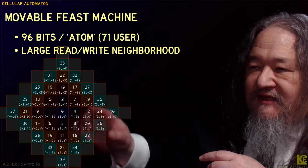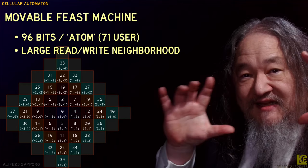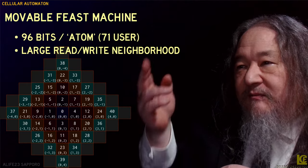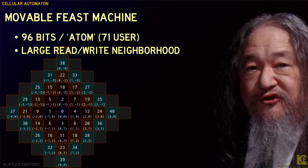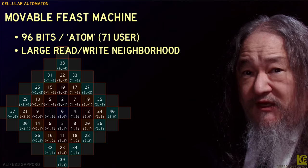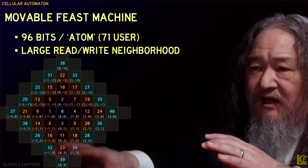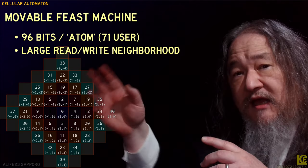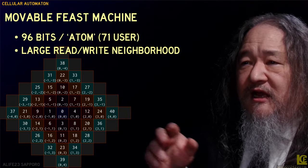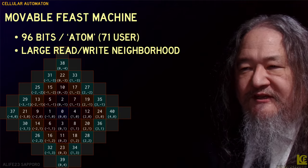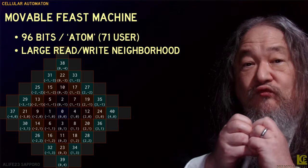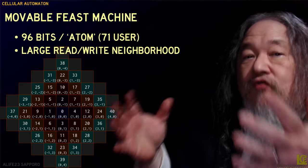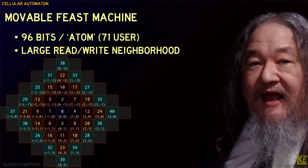The Movable Feast Machine has a radius of Manhattan distance of 4 from the center — that's the size of the neighborhood. But each of those sites is able to hold a 96-bit atom, of which there are 71 user-writable bits. It's really big — overall, if you multiply it all out, there's over 4,000 bits of modifiable state. And unlike synchronous cellular automata, when an event happens on the Movable Feast Machine, the thing in the center running sequential code to perform the transition can read and write the entire neighborhood as it wishes.